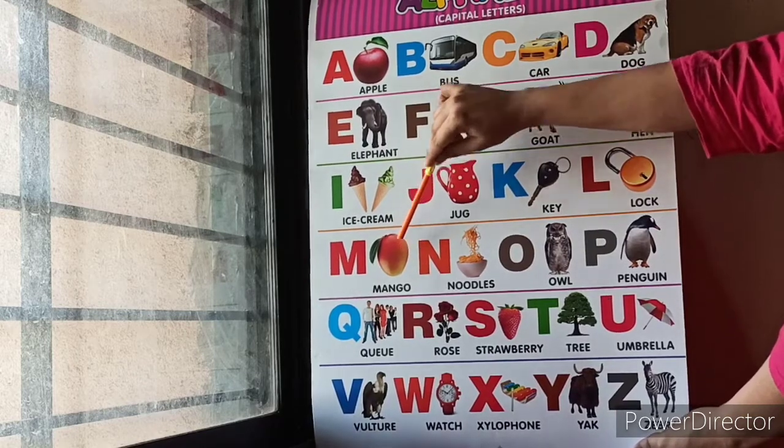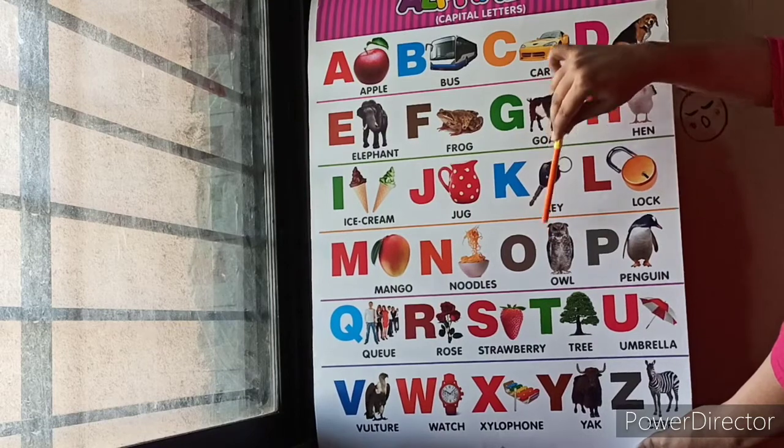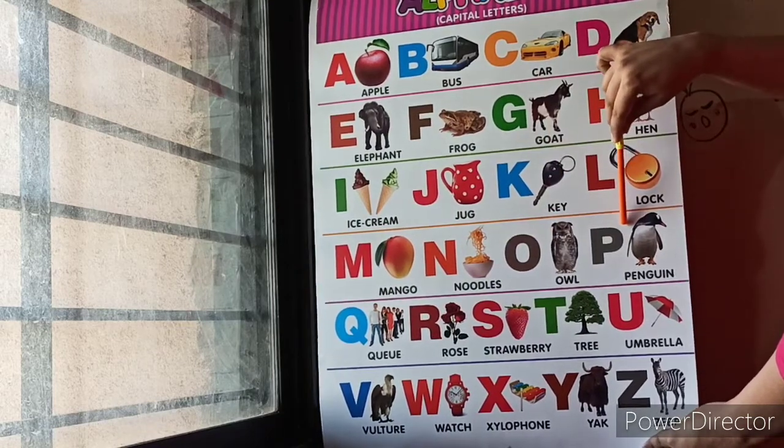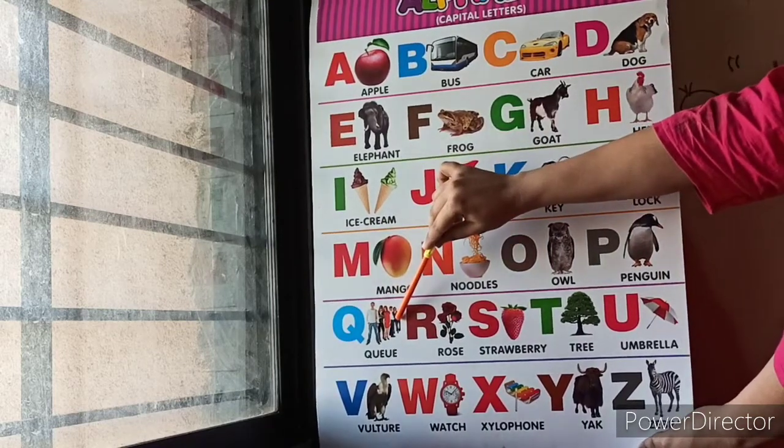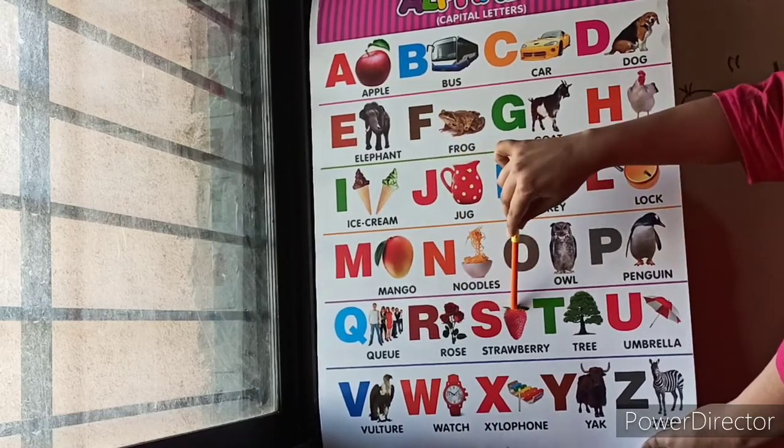N for Noodles, O for Owl, P for Penguin, Q for Queen, R for Rose, S for Strawberry.